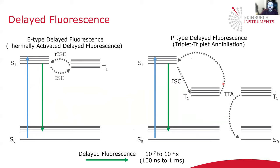The other type of delayed fluorescence is known as P-type delayed fluorescence or triplet-triplet annihilation. This requires at least two molecules — it's a bimolecular process. The molecules are excited to a singlet excited state and undergo intersystem crossing to the triplet. There is then an interaction between the triplet state of one molecule and the triplet state of another, and they undergo triplet-triplet annihilation. During this process, the triplet of one molecule is de-excited back down to the singlet ground state, and the triplet of the other molecule is excited to a singlet excited state, which can then radiatively relax, resulting in delayed fluorescence. Delayed fluorescence tends to occur on a timescale somewhere between fluorescence and phosphorescence, with typical lifetimes of 100 nanoseconds to one millisecond.